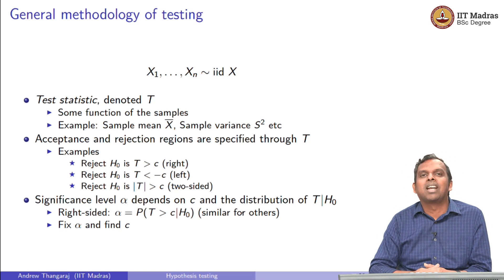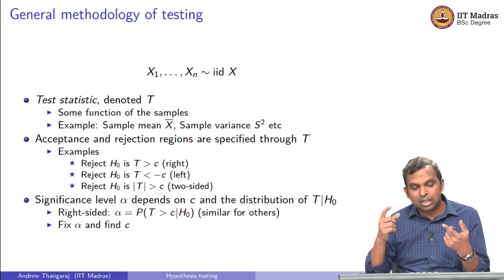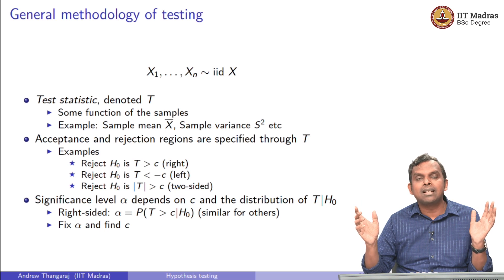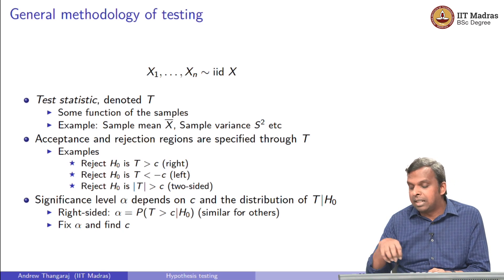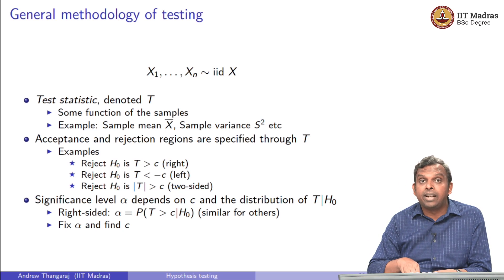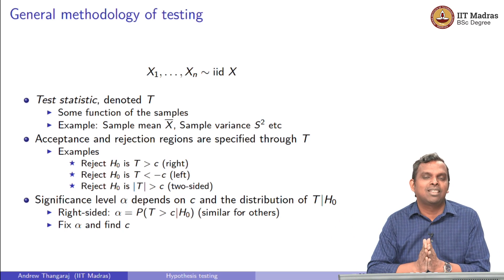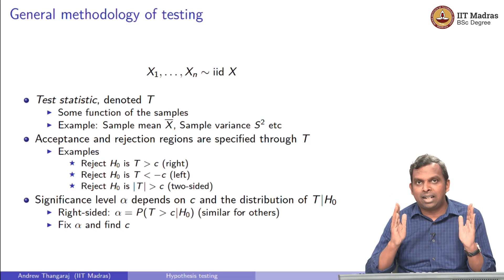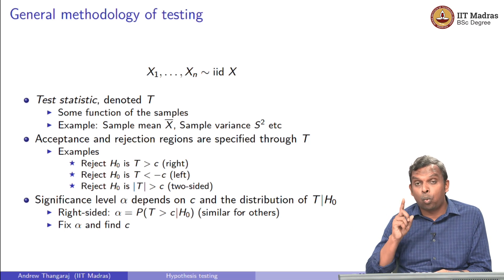What is a test statistic? It is just a function of the samples — some function of the samples. It could be the sample mean, it could be the sample variance, or something else you compute from the samples, but it is just one number. From the samples, you find one number. Your acceptance and rejection regions are specified in terms of this one numerical test statistic. So instead of dealing with n random variables, you deal with only one random variable — one is much better than n when it comes to analysis. You compute it using the samples and then specify your acceptance and rejection regions through that one test statistic.